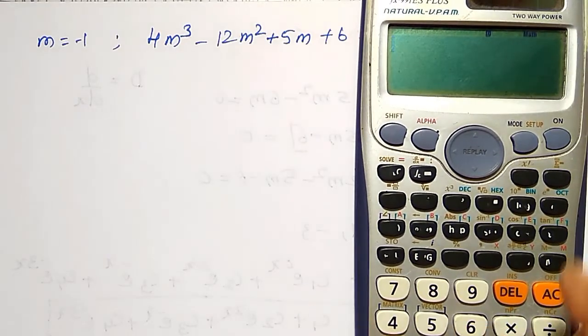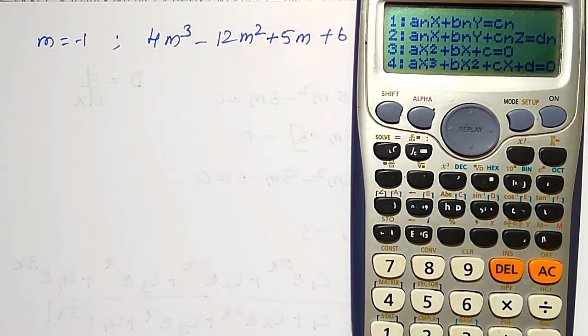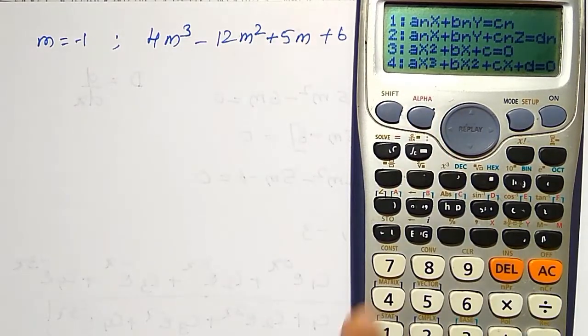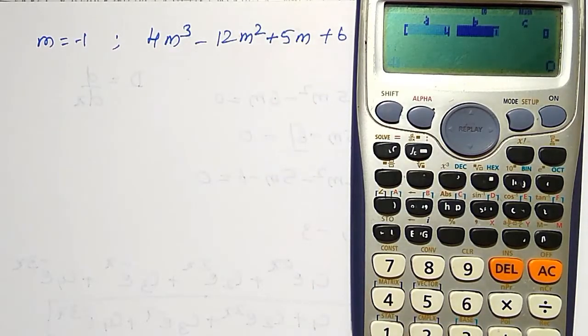In calculator, I will go to the equation mode, option number 5. In that option number 5, cubic equation is the fourth option. In that, the coefficients you have to substitute. A is 4, B is -12, C is 5, and D is 6. And then, upon pressing equal to, we get the roots.